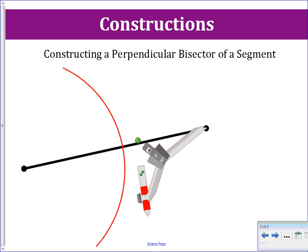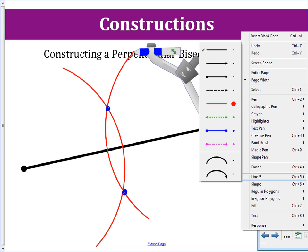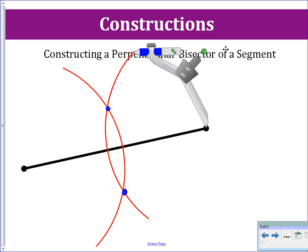Then we are going to move our compass to the other side and repeat the same thing. So we have our intersections — we intersect here and we intersect there. Our arcs intersect, so we are going to connect them and draw our line. This line represents the perpendicular bisector of our segment. It is perpendicular to the segment and it cuts it in half.